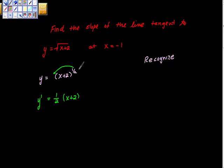Remember we have to decrement the exponent by 1, so 1 is the same as 2 over 2. So 1 half minus 2 over 2 is negative 1 half. And then we multiply by the derivative of the inside, and the derivative of the inside is just 1.